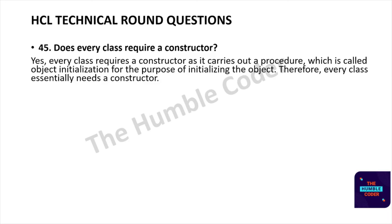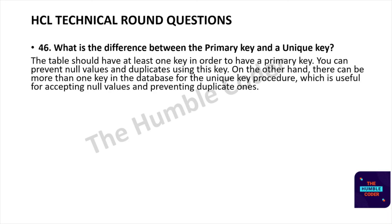The next question is: what is the difference between a primary key and a unique key? A primary key prevents null values and duplicates and a table should have at least one. On the other hand, there can be more than one unique key in the database, which accepts null values but prevents duplicate ones.